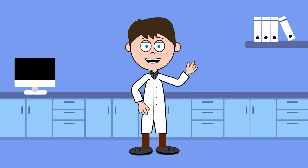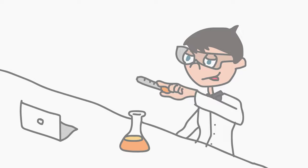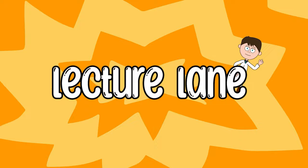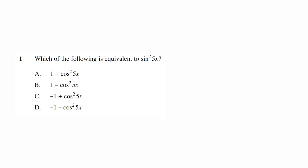Hello lecture laners, today we'll be going through the 2021 HSC Maths Advanced paper. With multiple choice there are always two ways of doing it: we can either solve it like a short answer question, or complete it like a multiple choice question by substituting in values until we get the correct one. It is a little bit faster if you do it this way, but I will show you both ways.